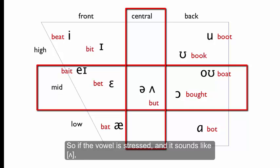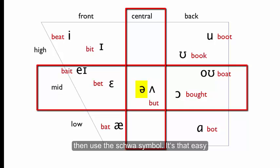So if the vowel is stressed and it sounds like schwa, then use the caret symbol, also known as the wedge. If the vowel is unstressed and it sounds like schwa, then use the schwa symbol.